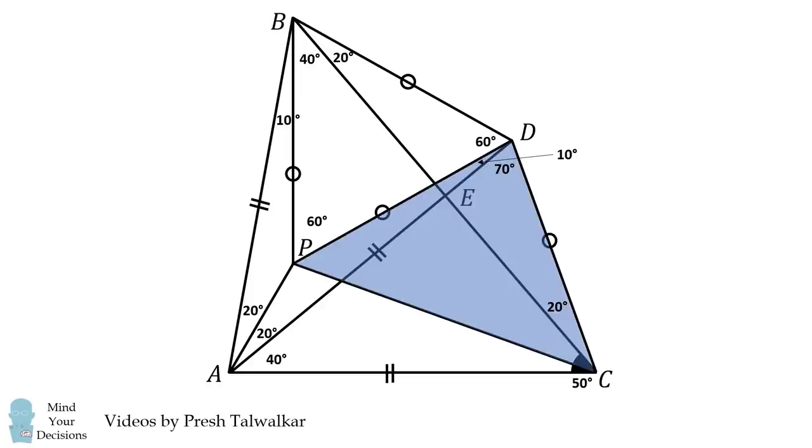From here, we consider triangle PDC. This is an isosceles triangle with a vertex angle of 80 degrees, so the other two angles will be equal to 50 degrees each. So, DPC is 50 degrees, and finally, PCE will be equal to 30 degrees. The remaining angle will be equal to 20 degrees.